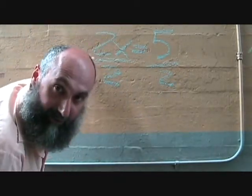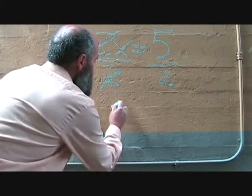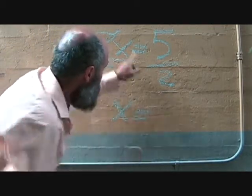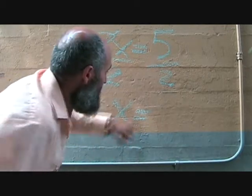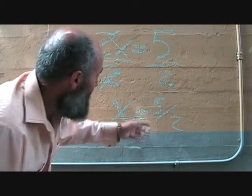So what happens is 2 divided by 2, they just kill each other, so what you've got left is x on this side, line up your equal sign, 5 over 2, and that's your final answer.